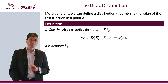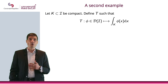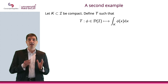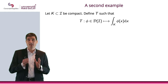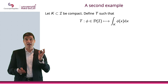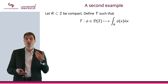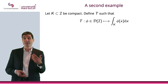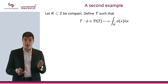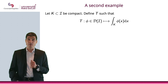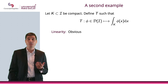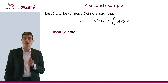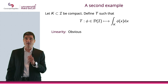Let's look at a second example. I'm going to consider a compact set K included in I, and define T as the application from D(I) to ℝ that associates to φ the integral over K of φ(x)dx. Is this a distribution? First, is it linear? Well, pretty obviously it is — it comes from the linearity of the integral. So linearity is not a problem.